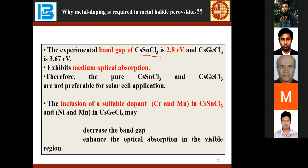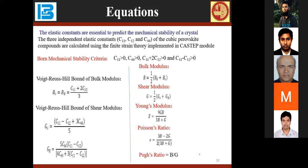The experimental band gap of cesium tin chloride is 2.8 electron volts and cesium germanium chloride is 3.67 electron volts. They exhibit medium optical absorption especially in the ultraviolet range. Therefore, pure cesium germanium chloride is not preferable for solar cell applications. The inclusion of suitable dopants like chromium and manganese, and nickel and manganese, may decrease the band gap and enhance the optical absorption in the visible region, motivating this study.